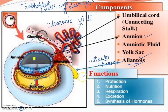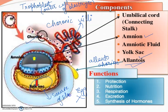Jo human egg hota hai usme yolk nahi hota hai. Human female mein jo egg milega wahan yolk absent hoga. Aur iska human beings mein naya function hai - yeh jab early development ho raha hota hai toh yeh ek stem cell ka source hota hai. Stem cells se saari cells differentiate hoti hain, and it will give rise to blood and lymphoid cells, and these stem cells will migrate into the developing embryo.